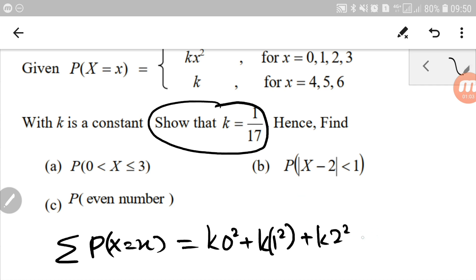And k2 square, which is 4, k3 square. So we've done with 0 to 3.